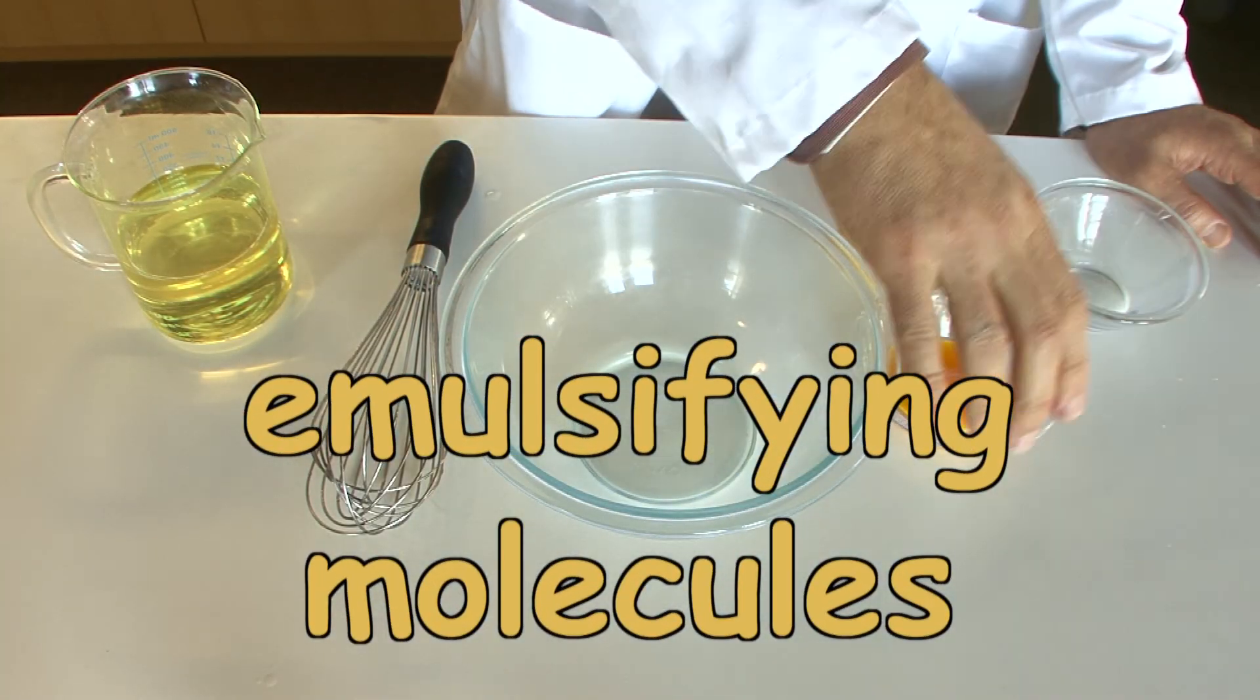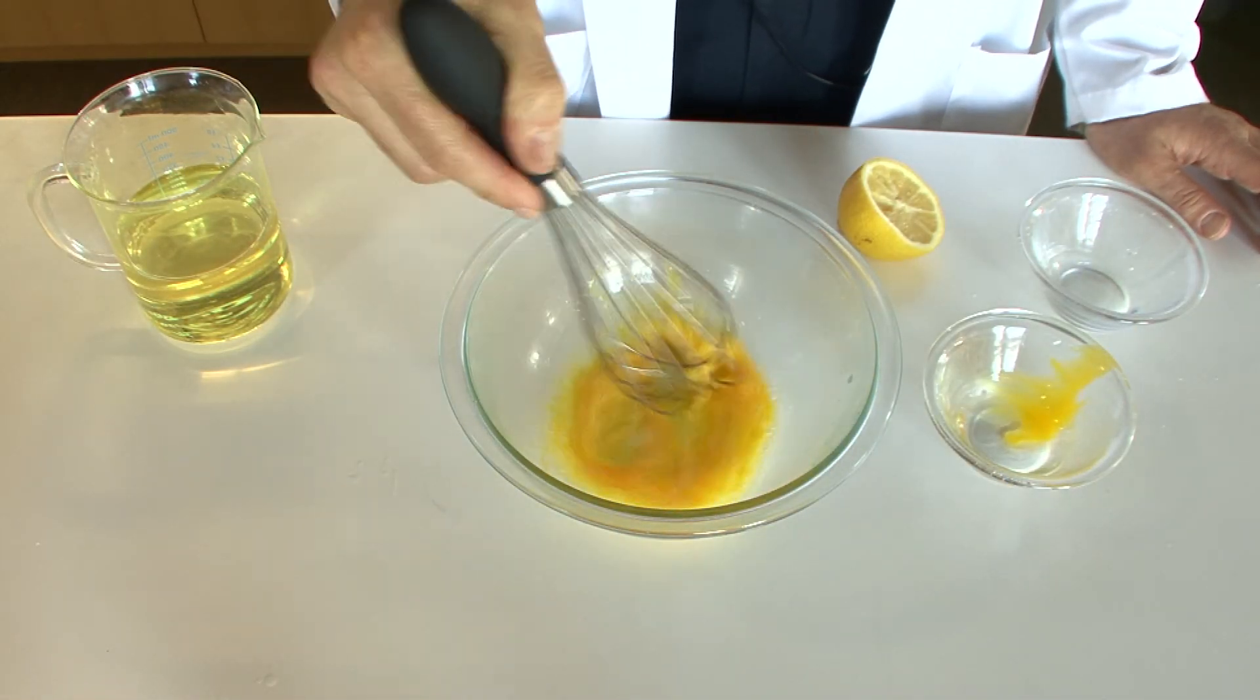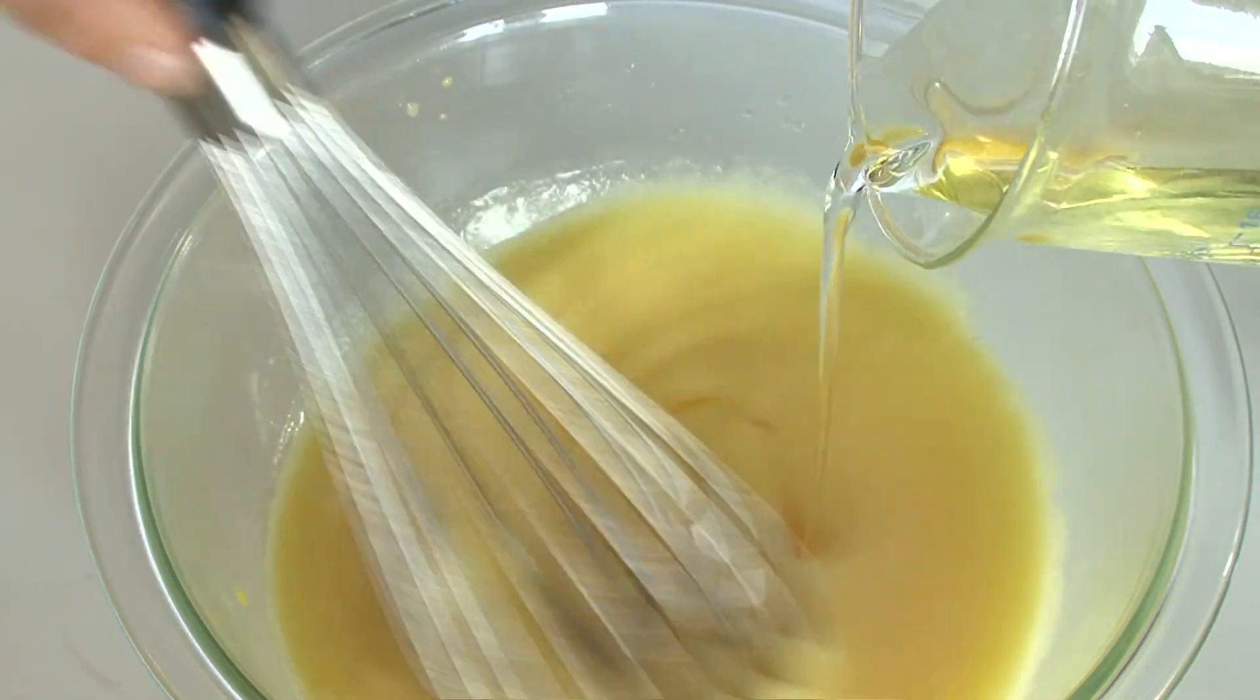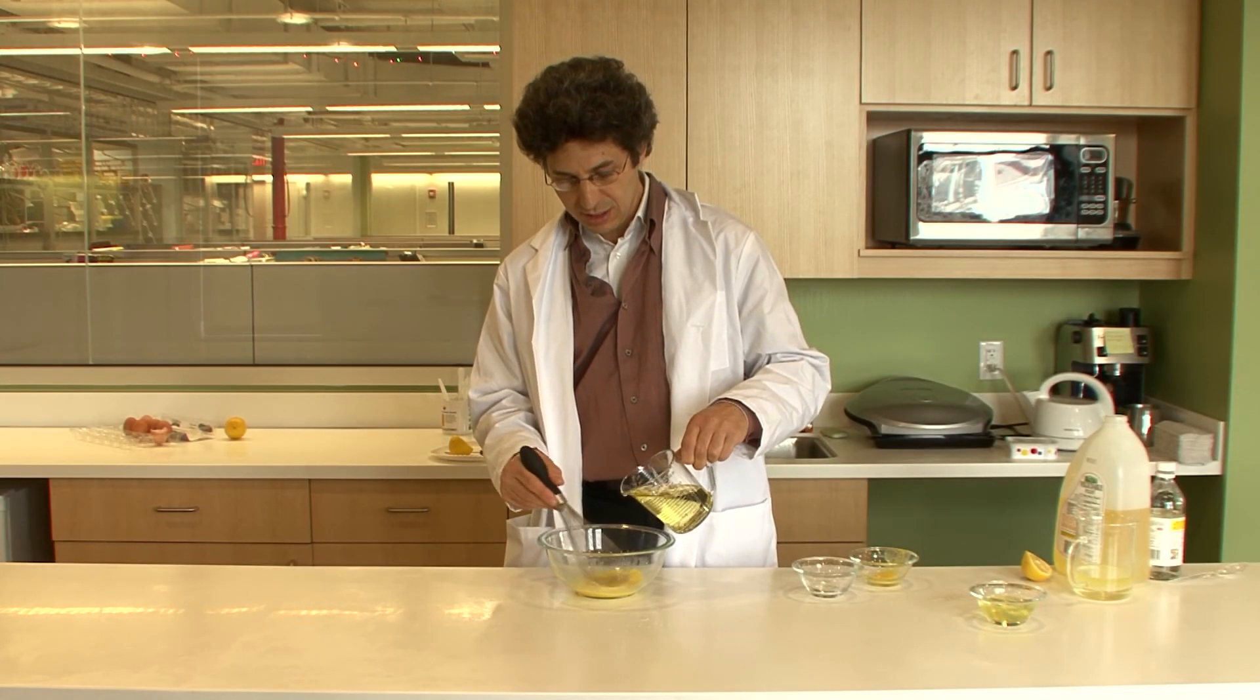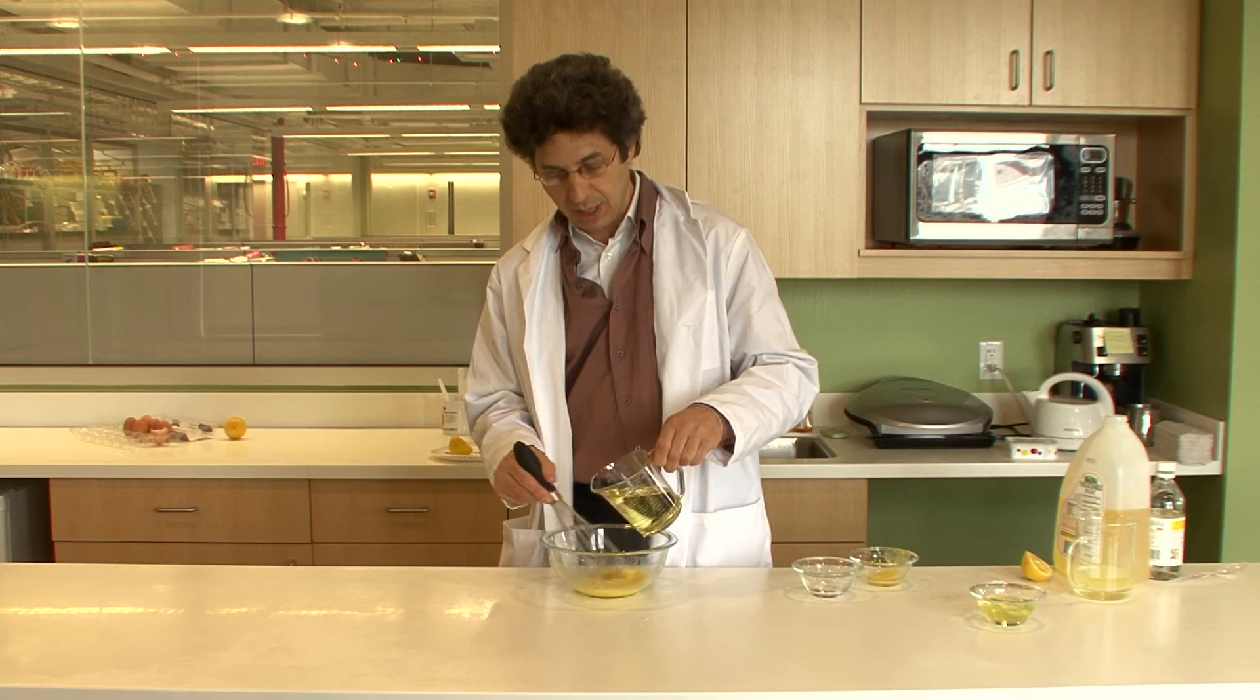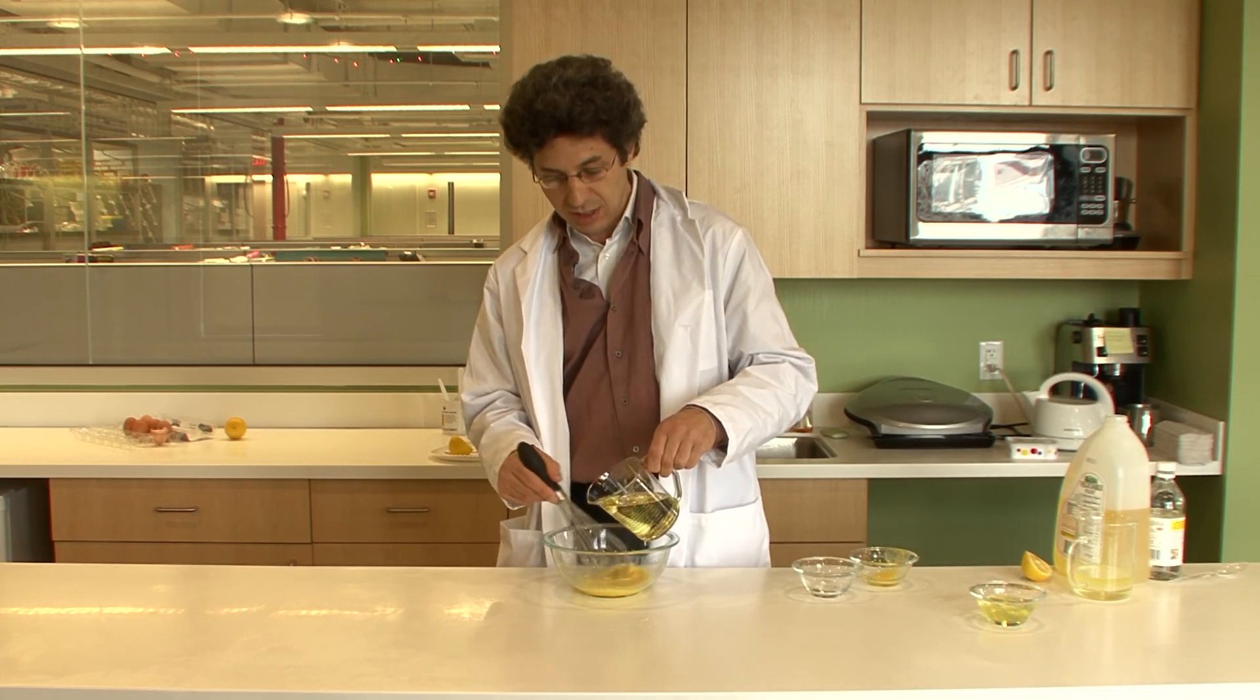Kirschenbaum mixes the egg yolks and the vinegar together, then introduces the oil. The trick is to begin very, very slowly, very small quantities with vigorous whisking, breaking apart the oil into small droplets. Those small droplets can then be covered by the emulsifying molecules that are present in the egg yolk.